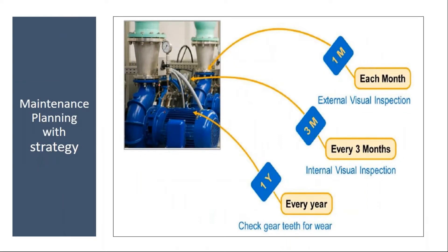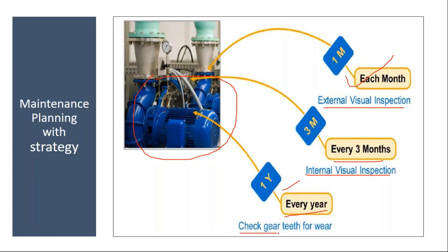This is the example. You have a pump. Every month, they will do the external visual inspection. After every three months, they will do the internal visual inspection. And every year, once in a year, they will check the gear teeth firmware. So on the same object, for different intervals, they do different activities. In that case, you need a multiple cycle plan with different cycles and different activities, and for that you need to create a strategy.